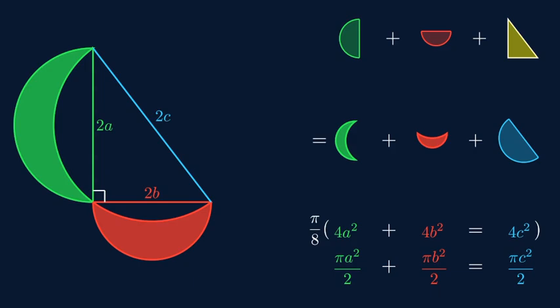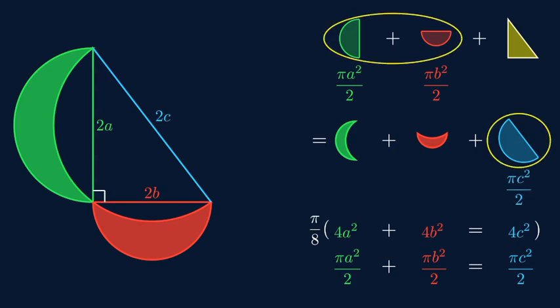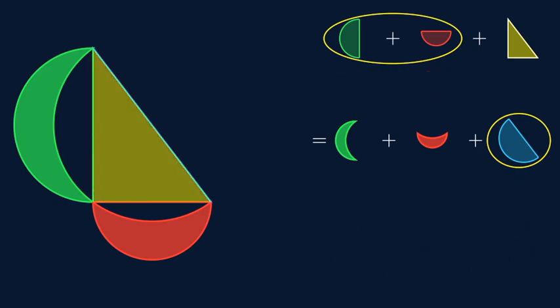Notice something interesting here. Pi a squared by 2, that's the area of the green semicircle. Pi b squared by 2, red semicircle. Pi c squared by 2, blue semicircle. By our equation, the green plus red semicircles equals the blue semicircle. And since they're on opposite sides of our equation, we can just cancel them out.